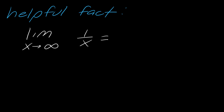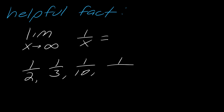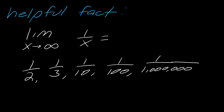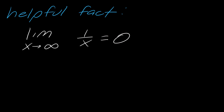Let's think about the limit as x goes to infinity of 1 over x. If you think about what happens as x gets bigger and bigger — 1/2, 1/3, 1/10, 1/100, 1/1,000,000 — the overall value of the fraction is getting smaller and smaller. If you were to plug these into a calculator, the bigger your number gets, the closer this whole thing gets to zero. So the helpful fact is that this limit equals zero.